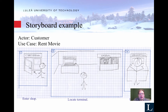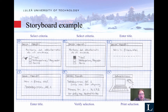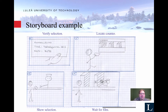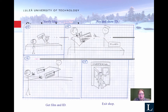Here is a simple storyboard where a customer wants to rent a video. The frames are numbered so you can refer to them in discussion. The user locates a terminal, uses the terminal, gets an option to select title, actor, or genre, selects title, enters the name of the movie, gets a print selection ticket, shows it to the cashier who fetches the video, hands over the rental card, and exits the shop. This illustrates the full functionality of renting a video and can provide a good foundation for discussion.